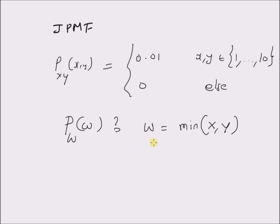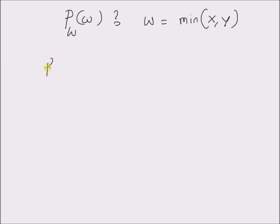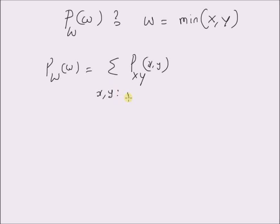For this new random variable W, we want to derive the probability mass function. The definition is the summation of the joint probability mass function for all the values of (x, y) that map to the new variable W.